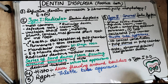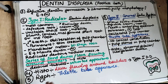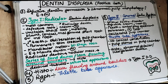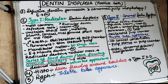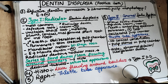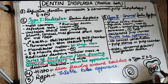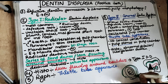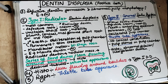This histological appearance is because the dentinal tubules are actually arranged in a typical whorled appearance. As seen in the diagram, the dentinal tubules are arranged in whorls, giving this characteristic whorled appearance. This is the defining histological feature of type 1, radicular dentine dysplasia.